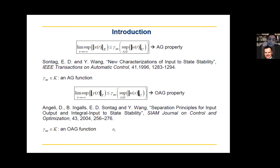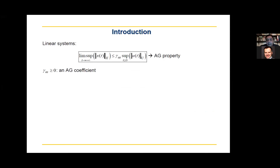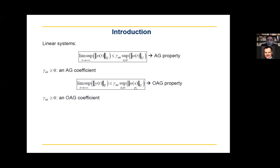All these papers formulated these properties for finite-dimensional systems, but the generalization to infinite-dimensional or abstract control systems is direct. For linear systems, the asymptotic gain property uses gamma_as not as a function but as a non-negative number — the asymptotic gain coefficient. Similarly, the output asymptotic gain property for linear systems has gamma_as as the output asymptotic gain coefficient.